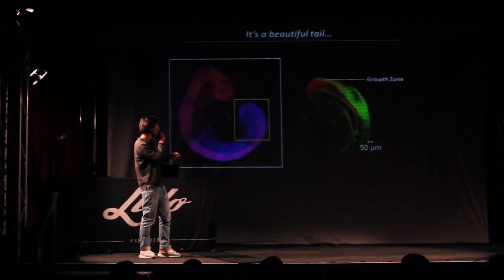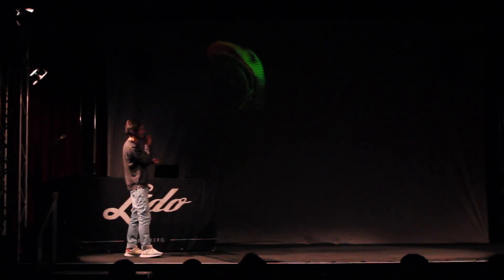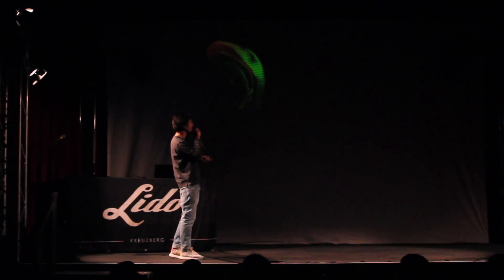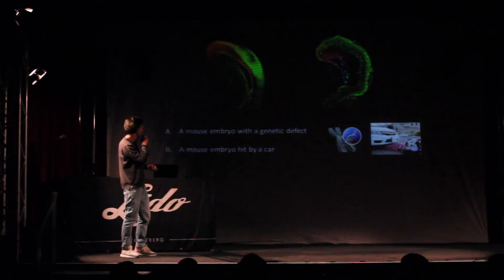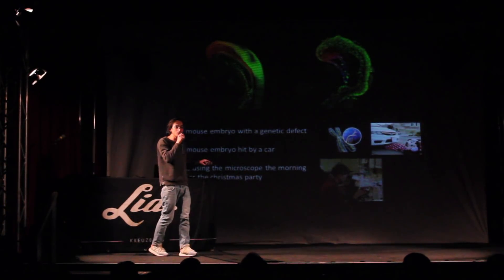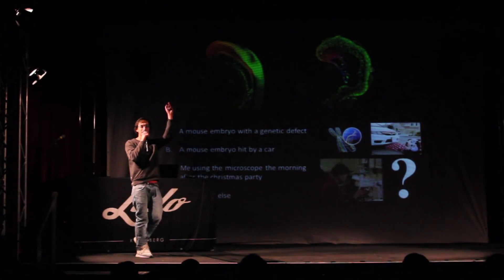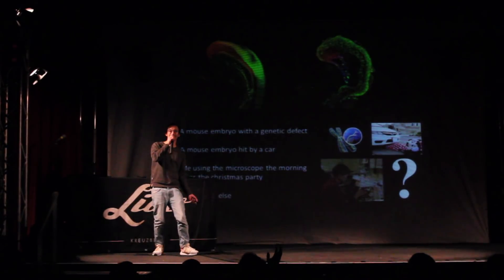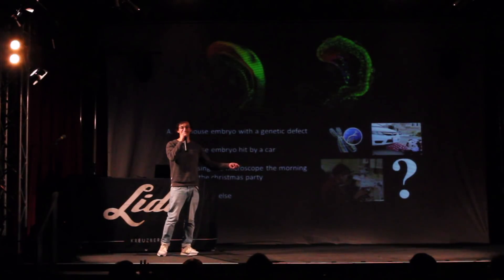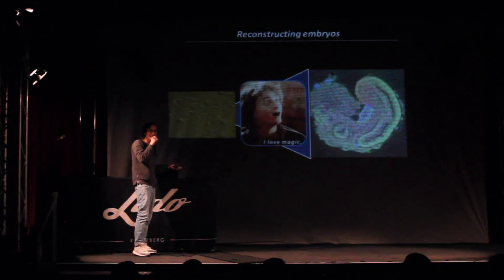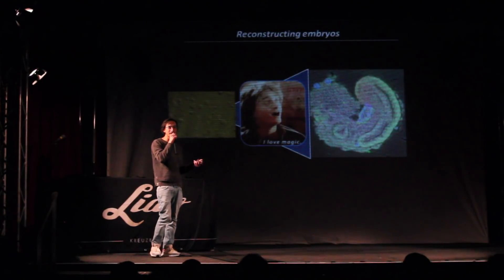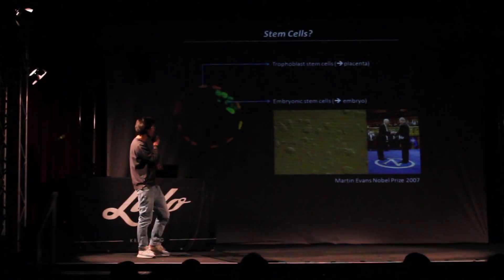So if I switch on a microscope in the morning I see structures that look like this. But just before Christmas 2017, I switched on the microscope and saw a structure that looked like something very different. What do you guys think I had been doing — what was I seeing? Was it a mouse embryo with a genetic defect? A mouse embryo hit by a car? Me using a microscope the morning after the Christmas party — not too unlikely. Or was it something else entirely? So let's have a vote: A, B, C, D. You guys are good — yeah, it was something else entirely. Over the course of a couple of days, I had taken some stem cells, some science magic happened, and I ended up with a structure that essentially looked like the tail of an embryo, created solely from stem cells.